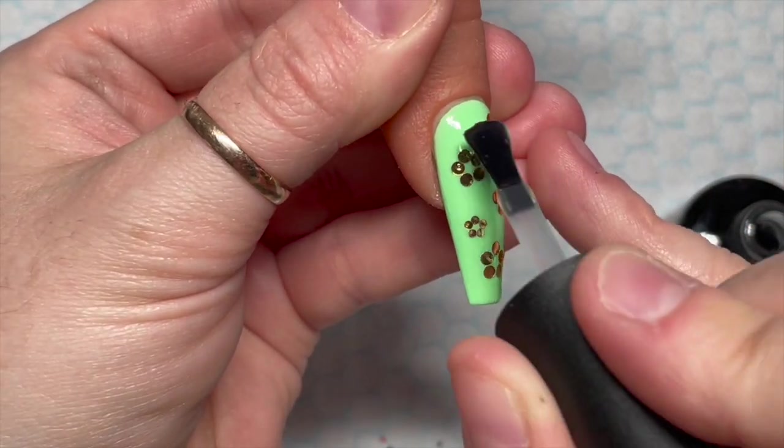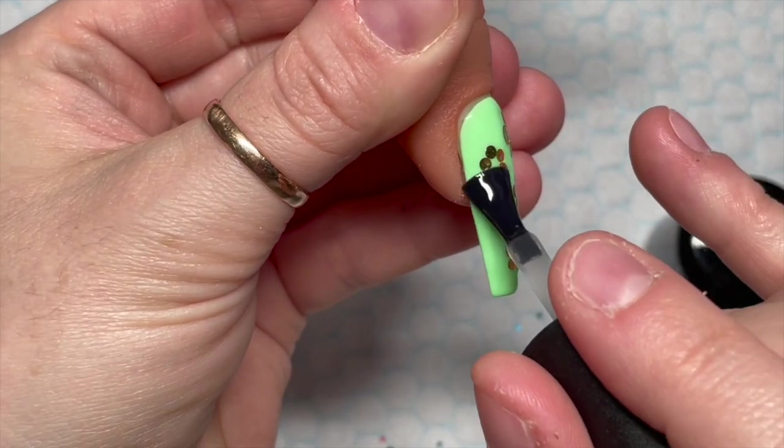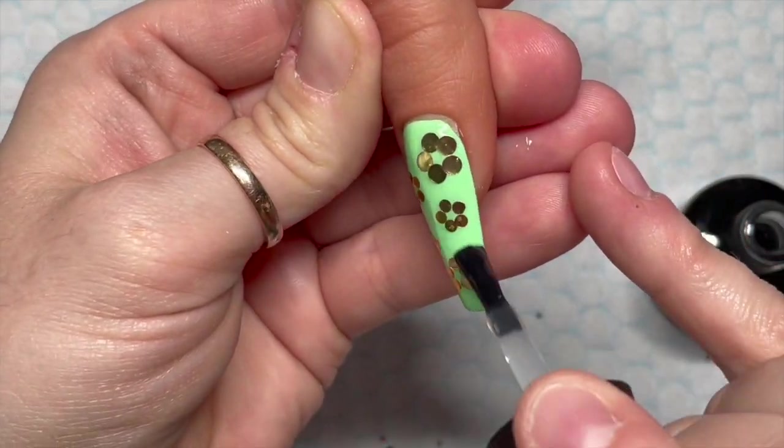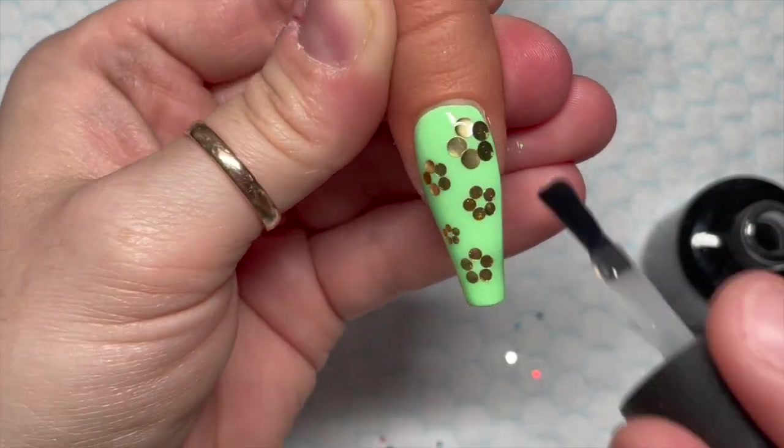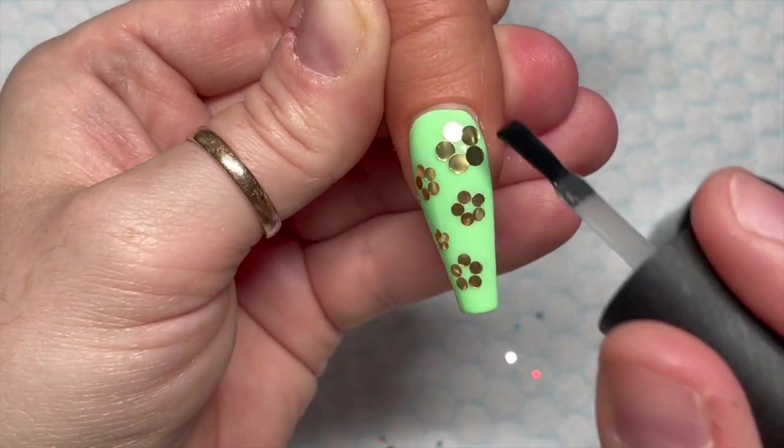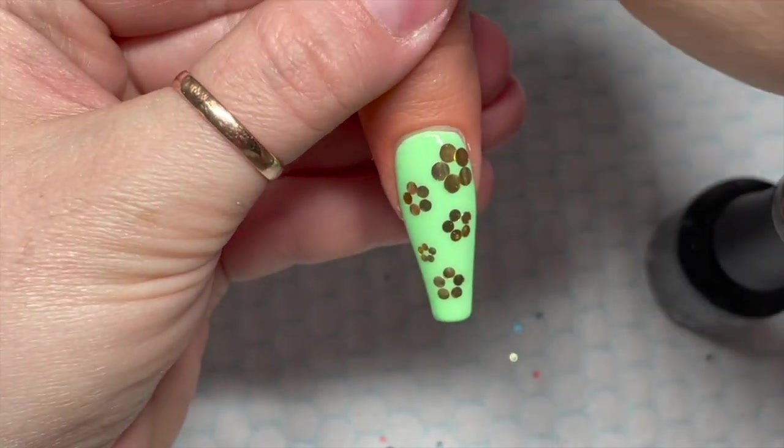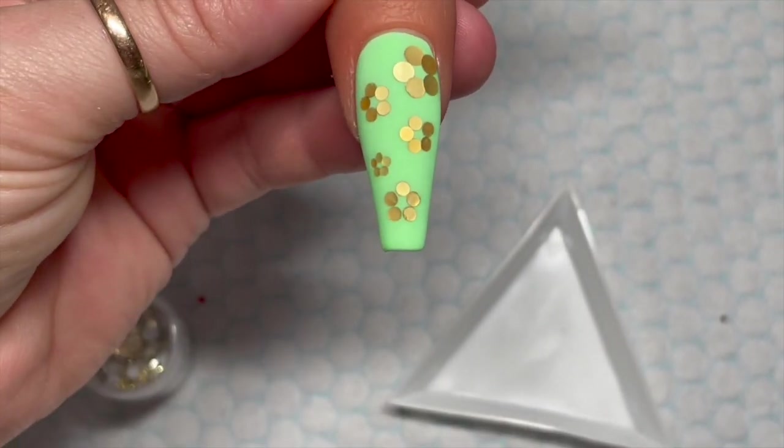Then I'm going to go over with the Madam Glam Velvet Matte Top Coat, because I love the Velvet Matte Top Coat. Just make sure it's completely covered so you haven't got any shiny bits. Pop it in the lamp to cure. How cool is that?